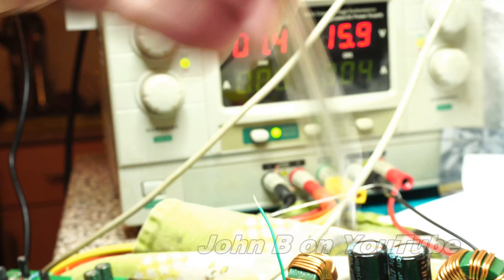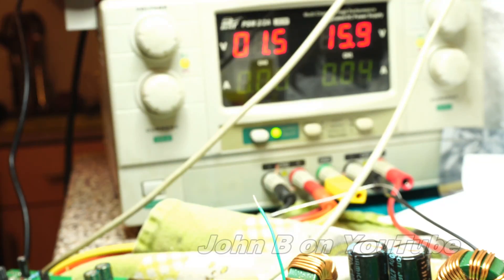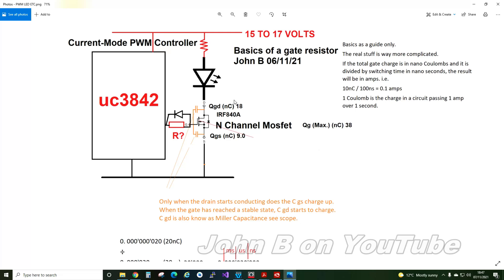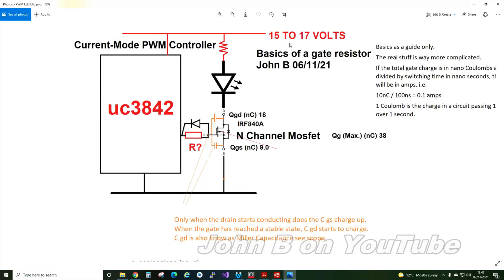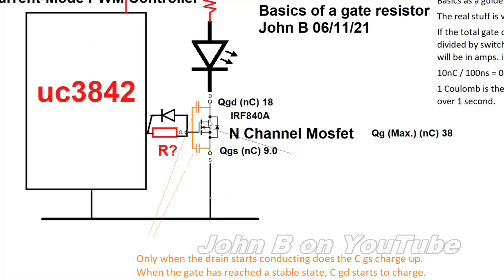What I'm hoping to do is give you some simple equations to find the value of your resistor. It's connected to my power supply with some long leads, and my oscilloscope. Here's my schematic. I've got 15 to 17 volts, a high power LED with a couple of inline resistors, a UC3842 current mode PWM controller, and my FET IRF840A. They quote a total gate charge of 38 nanocoulombs — don't let the nanocoulombs worry you, I'll go into that in a second.